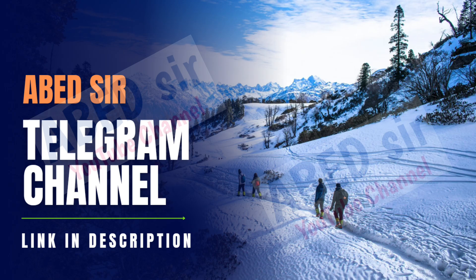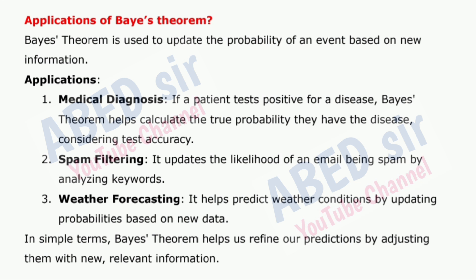Next important short question: Applications of Bayes' theorem. Bayes' theorem is used to update the probability of an event based on new information. Applications: 1. Medical diagnosis — if a patient tests positive for a disease, Bayes' theorem helps calculate the true probability they have the disease, considering test accuracy. 2. Spam filtering — it updates the likelihood of an email being spam by analyzing keywords. 3. Weather forecasting — it helps predict weather conditions by updating probabilities based on new data. In simple terms, Bayes' theorem helps us refine our predictions by adjusting them with new, relevant information.